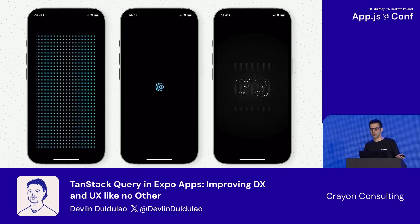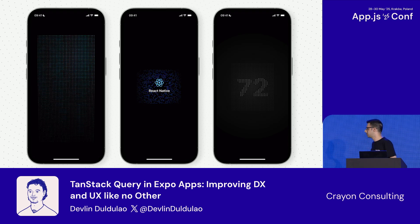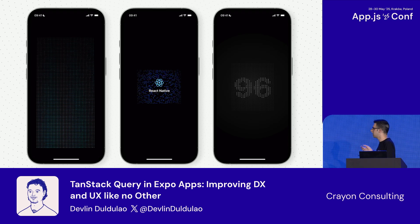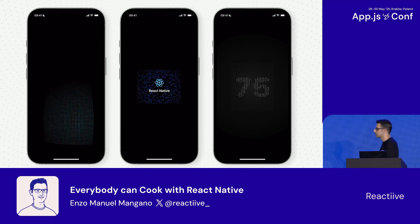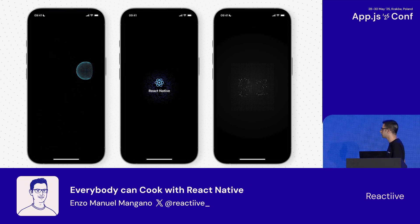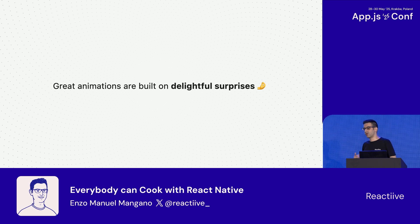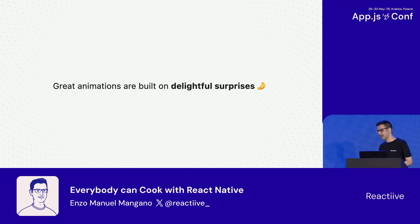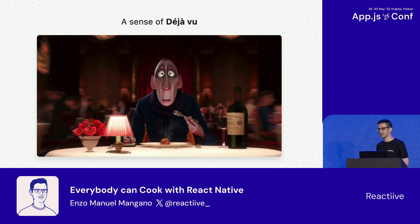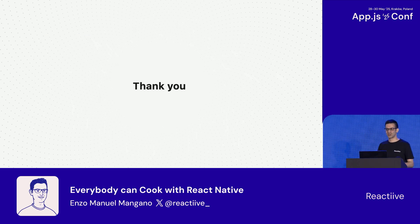I'm not saying you need to mount a canvas everywhere — you need to find the right balance, because mounting a canvas can be expensive from a memory standpoint. Just keep in mind that this can happen a lot of times, and all of these examples potentially can be built with regular React Native but just won't work without the Atlas API. That's really it. Today I tried to share all the most important tips I collected over the past years. If I had to wrap it up in one sentence, I would say that great animations are built on delightful surprises. If you really want to surprise someone, you have to deliver a sense of déjà vu. Thank you so much — it has been amazing to be at the App.js, and I'm super grateful to be here.